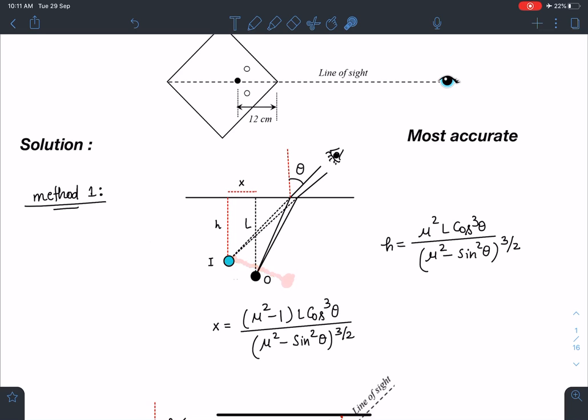But if you see μ value is given 4/3, l is given 12 and this θ is at 45 degrees. I will tell you why I am saying θ is at 45 degrees. So you can see these expressions are going to be very tough to calculate. So it's very unlikely that JEE would have thought in these lines.